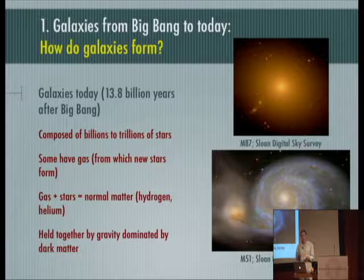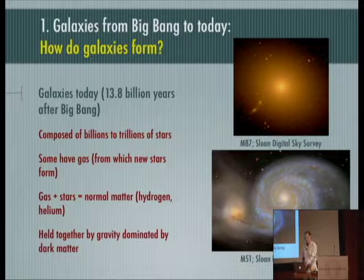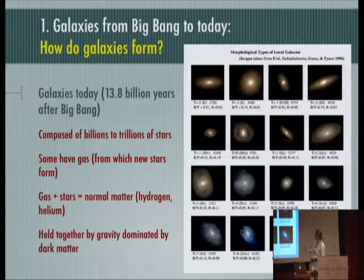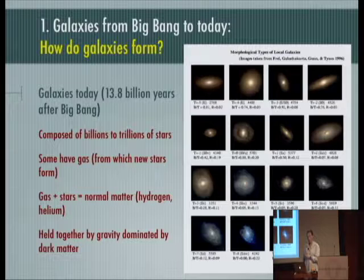When we measure the stellar motions, we find that the matter we see in these images is vastly inadequate to explain the gravity that must be holding those objects together — hence the word dark matter. There is something dark that we cannot see in these images that dominates the gravity of these objects at a tune of about 85%. There is a great variety of galaxies, but in all cases whenever we make the measurements we find that there is much too much gravity — much more than can be explained by just the stuff that we see.